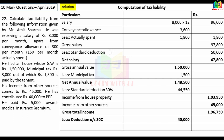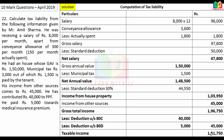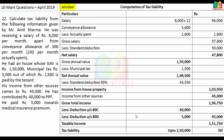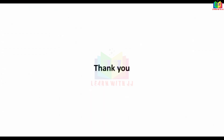Total income is Rs.1,96,750. After deductions under 80C (PPF Rs.40,000) and 80D (medical insurance Rs.5,000), taxable income falls below Rs.2,50,000. Therefore, tax liability is nil. In the next video, we will solve another problem. Thank you for your patient listening.